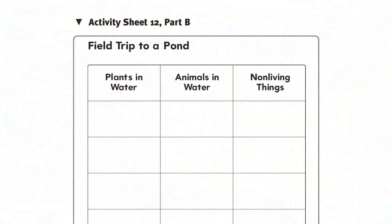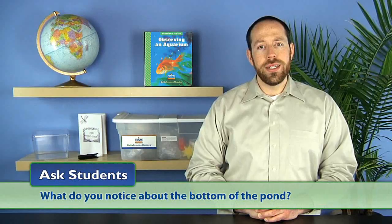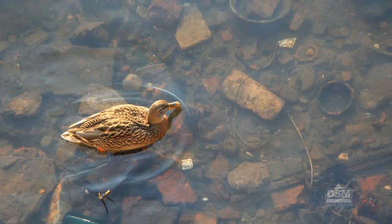Next, distribute a copy of Activity Sheet 12, Part B to each student and ask them to stand at the water's edge. Ask students: what do you notice about the bottom of the pond? Elicit that the bottom of the pond slopes — it is shallow near the shore and gets deeper toward the middle of the pond. Instruct students to look for plants and animals that live in the shallow water and have them record their observations on the activity sheet. Then have students observe and record the non-living things they see in the water. Ask students if they've seen any evidence of pollution, such as litter, in the water or along the shore.